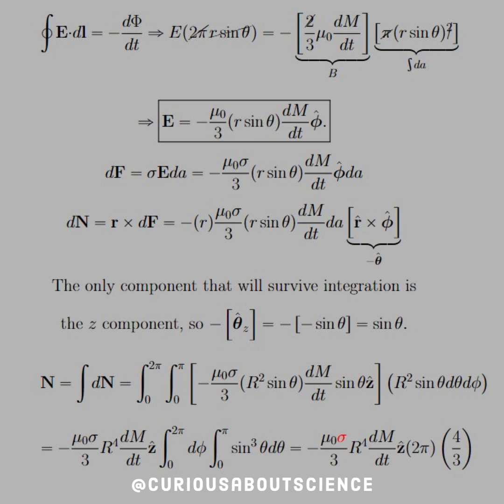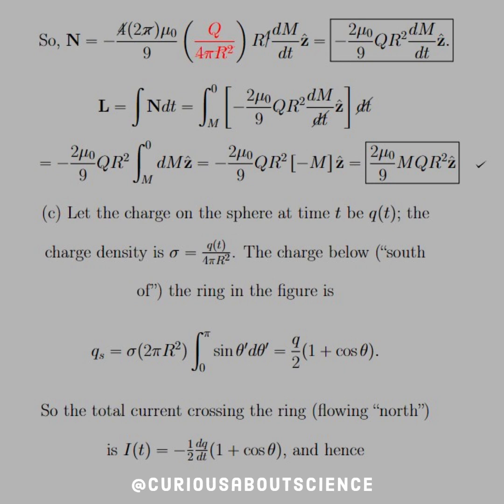We get this r cross phi cross product again. As you know, that gives us negative theta. Once again, we'll see that only one component survives integration, so we'll kind of expedite this process. Pull all the constants out front. You see we're in a little bit different situation here, where we have a negative mu naught sigma, which is highlighted in red. We'll have to plug in the surface charge there, just like we did for the magnetization earlier. And let's go ahead and simplify down what we can. Once we do that, you see we have a 4 pi and an r squared that cancels out from that sigma. So that simplifies things down nicely. And as you see, the torque equals negative 2 mu naught over 9 QR squared dM/dt in the z hat direction.